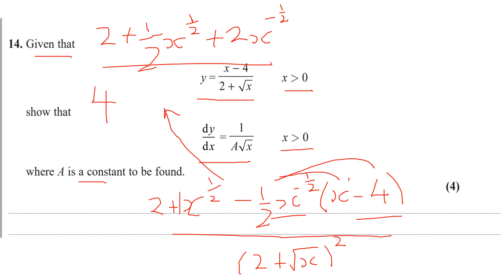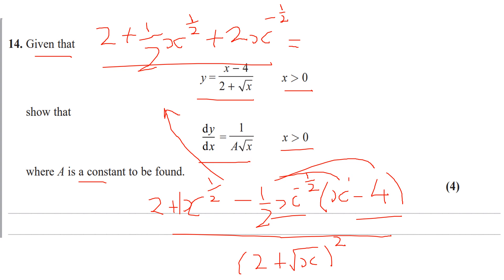On the denominator, if I expand it, I'm going to get 4 plus 4 root x plus x. Then I need to try and simplify this so it's in the required form. Actually, let's leave it in factorised form for now, because expanding it would make things far too complicated. I'm going to split this fraction into three components, so I have 2 over this, plus a half x to the half over this, plus 2x to the minus half over this. So I'm going to have 2 over 2 plus root x, all squared.